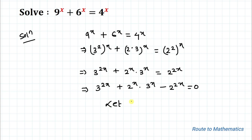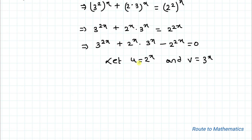In the next step, let's take u = 2^x and v = 3^x. Now substituting u and v, the above equation becomes v² + uv − u² = 0.